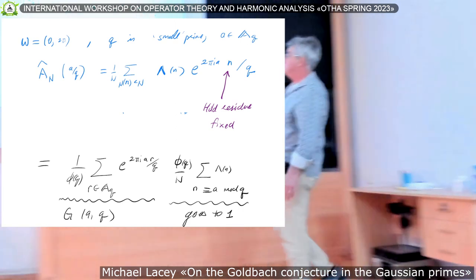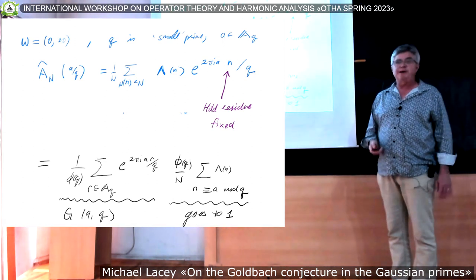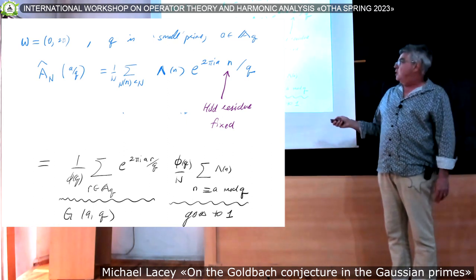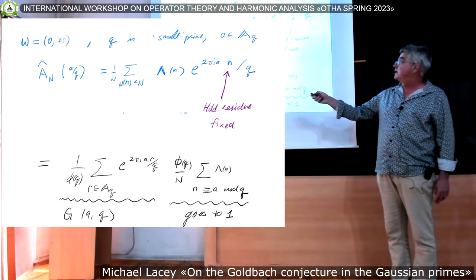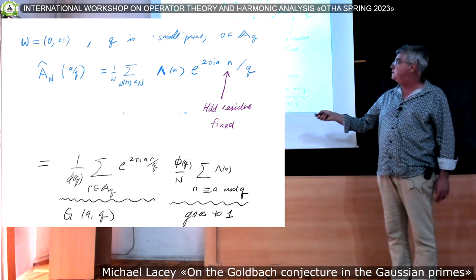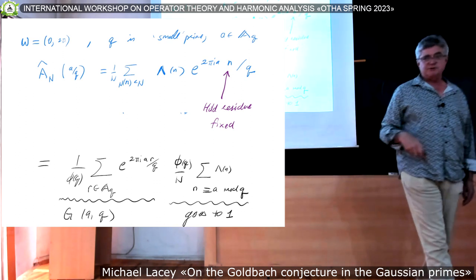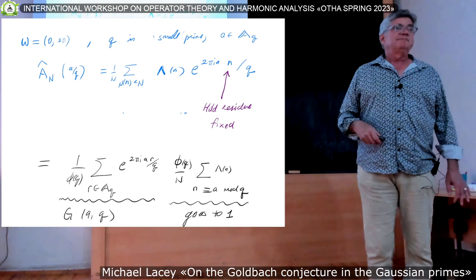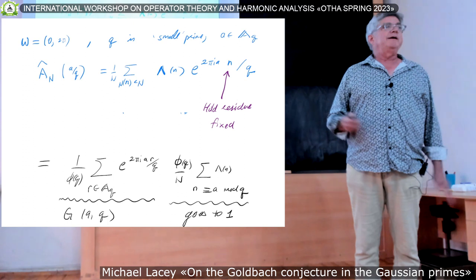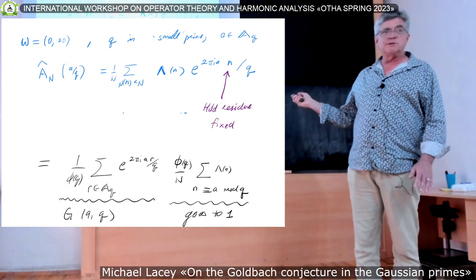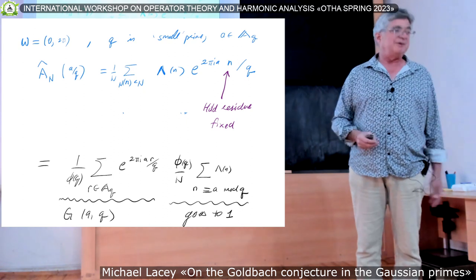And now you need to know that this goes to 1, which is the equidistribution of primes in progressions in the Gaussian integers. And we know that that's true, even with an error term. That's what the Siegel-Wolfowitz type result tells us. So we see that the Fourier transform of this function at the rational a over q is determined by this Ramanujan sum divided by the totient function. To argue that if you're sufficiently close to a over q, that you can also approximate the Fourier transform as I did, is much more involved.